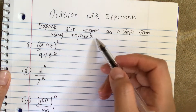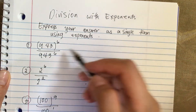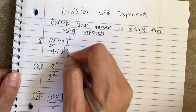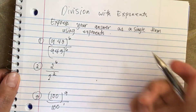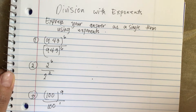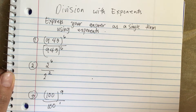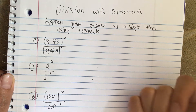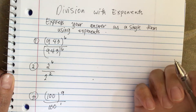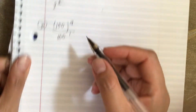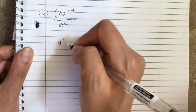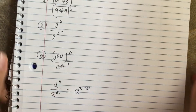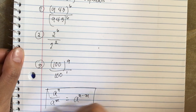Division with exponents: express your answer as a single term using exponents. We have 943 to the sixth power divided by 943 to the sixth power. You can divide powers with the same base using the Quotient of Powers property. To divide powers with the same base, keep the base and subtract the exponents: a to the n over a to the m equals a to the n minus m. This is the quotient rule.